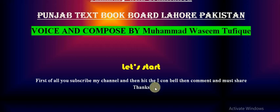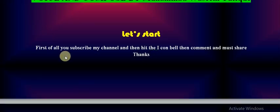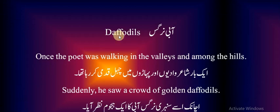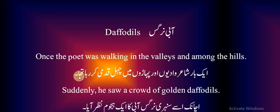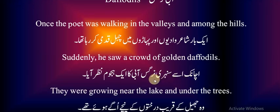Then comment and must share. Thanks. So let's restart the summary. Daffodils — abhi nargis. Once the poet was walking in the valleys and among the hills, and suddenly he saw a crowd of golden daffodils growing near the lake and under the trees.